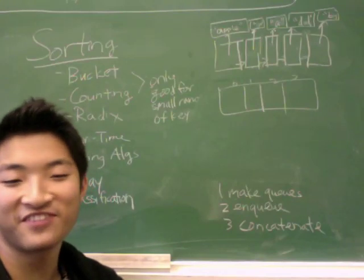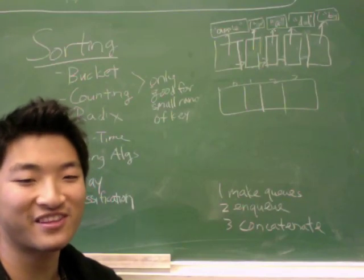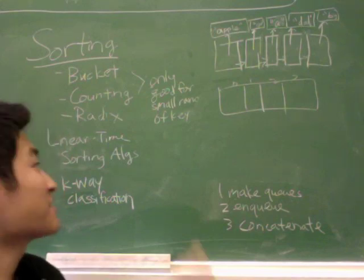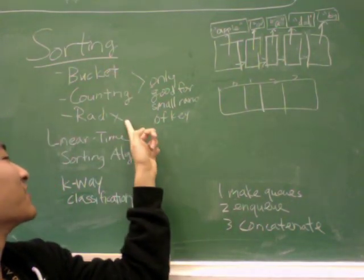Hi, welcome to Data Structures in 5 Minutes. This is the fourth of fifth videos on sorting. Today we'll be talking about Bucket Sort, Counting Sort, and Radix Sort.